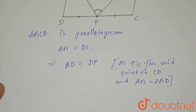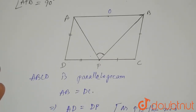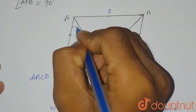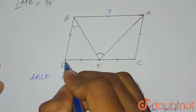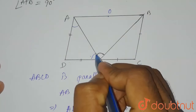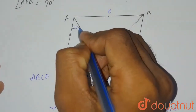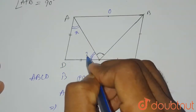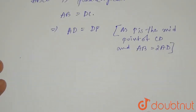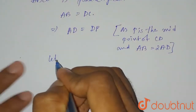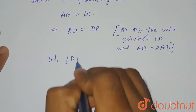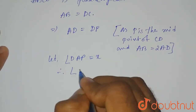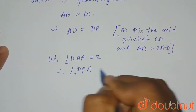Now in triangle ADP, since AD equals DP, the two sides are equal. That means angle DAP equals angle DPA. Let's call this angle x, so angle DAP equals x and angle DPA also equals x, because AD equals DP.